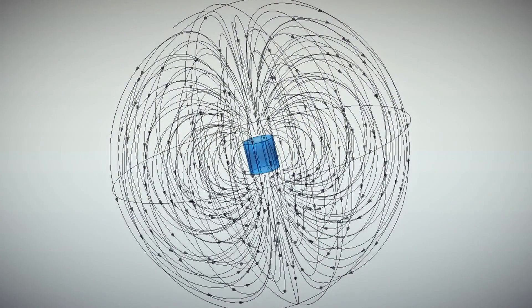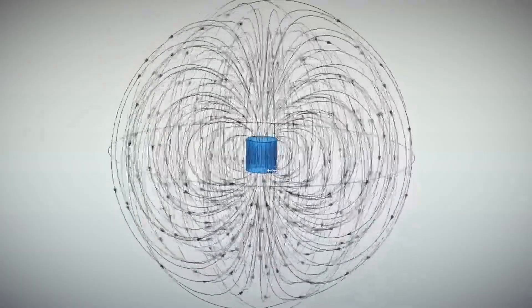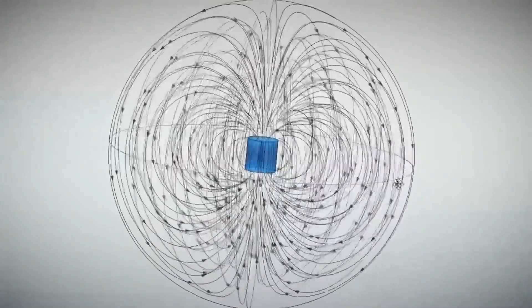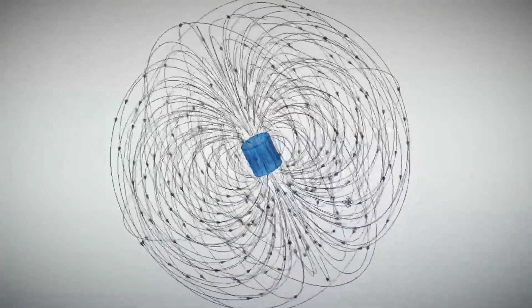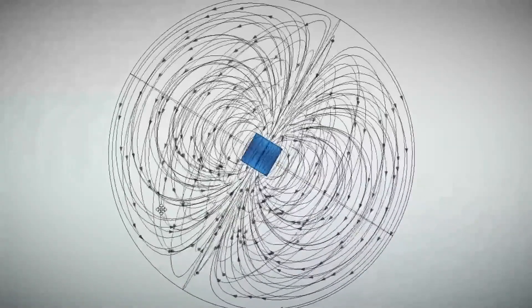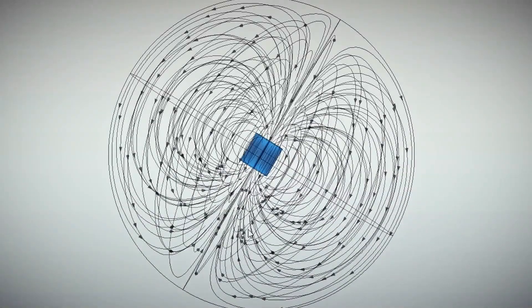Now, if we take a regular coil, the field around it will look like this. It's similar to the pictures of magnets you might have seen in school. The field lines exit from one end of the coil, loop around it, and enter from the other end, closing the loop.